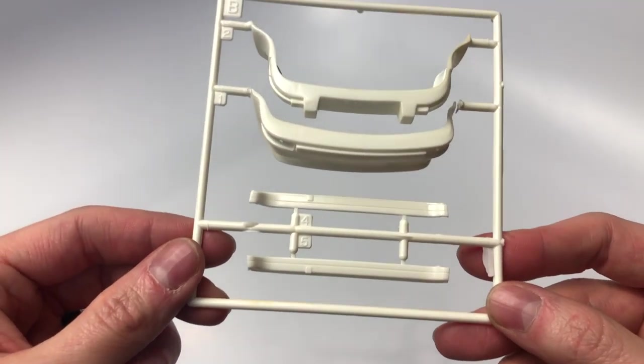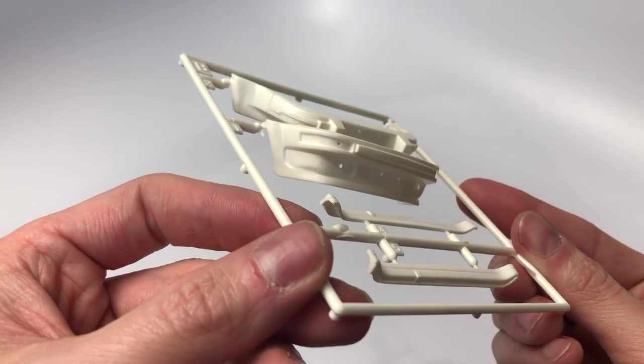This sprue we have body parts for the front and rear along with the side rocker panels.